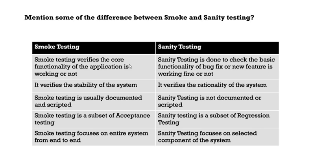Sanity testing is done to check the basic functionality of a bug fix or new feature. For example, if transfers was broken and you reported it, now you have got that bug fix in the build — you perform the transfers and actions around that particular part of the application. That is called sanity testing. Smoke testing verifies the stability of the system, whereas sanity testing verifies the rationality of the system. Smoke testing is usually documented and scripted, but sanity testing is not documented or scripted.